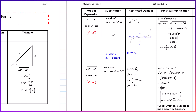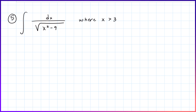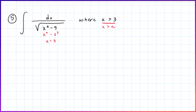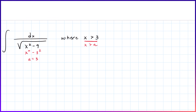So let's jump into our examples. We're taking a look at the integral of dx over the square root of x² minus 9. This is definitely of the form x² minus a², where a² is 9, so a equals 3. And in this particular case, we're specifically told that x is greater than 3, so x is greater than a.